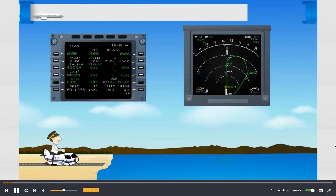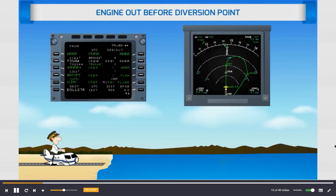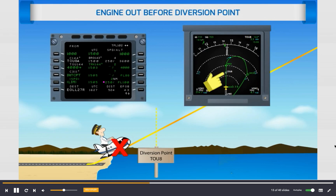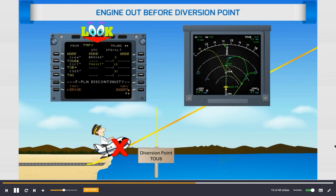Engine out before diversion point: in our example the diversion point is TOU 8. If an engine failure occurs before the diversion point, the MCDU automatically displays the engine out SID as a temporary flight plan on the flight plan page. The navigation display shows the engine out SID with a dashed yellow line.